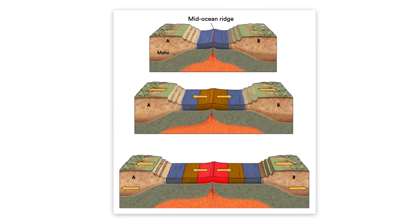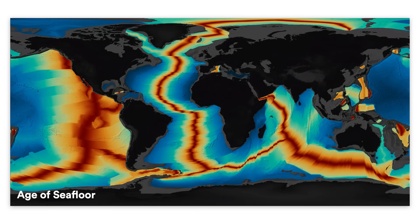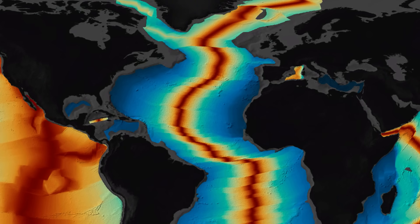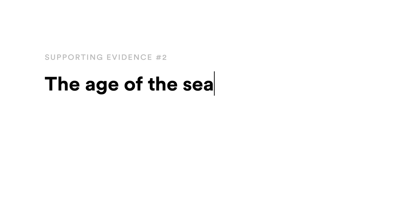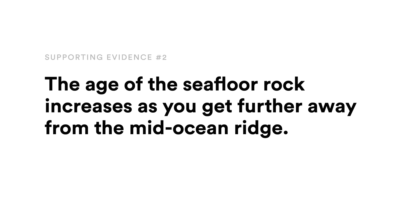Here's another diagram illustrating what we think happens along these spreading centers, where magma pushes its way up through the crack and spreads the plates apart above. One of the ideas was to look at how old the rock on the seafloor is, as that could potentially support this notion. If you were to map the age of the seafloor, you would notice that shown in red, we have very young rock right along the ridge. As you go away from the ridge in either direction — through orange and yellow to green and then blue — the age of the seafloor gets older. The only way that's really possible is if seafloor spreading is in fact occurring. So supporting evidence number two is that the age of the seafloor rock increases as you get further away from the mid-ocean ridge.